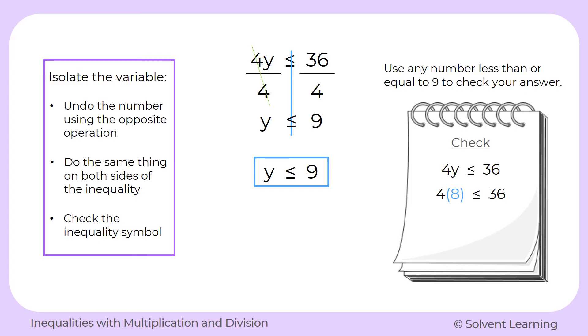4 times 8 gives us 32. So we have 32 is less than or equal to 36. And then we ask ourselves if that's true. And it is true because 32 is less than 36. So that tells us that our answer is correct. We did choose the correct inequality symbol for our solution.